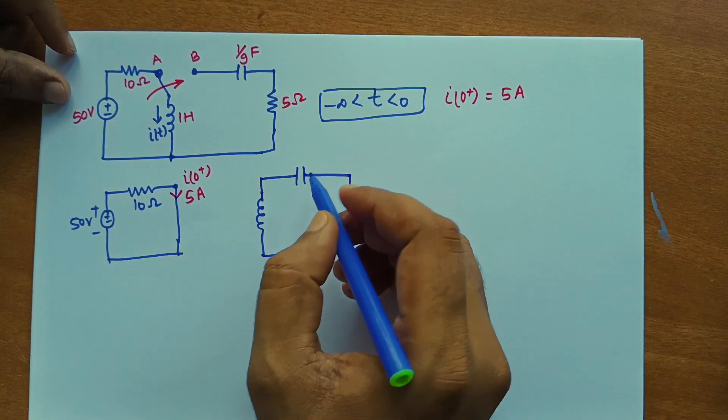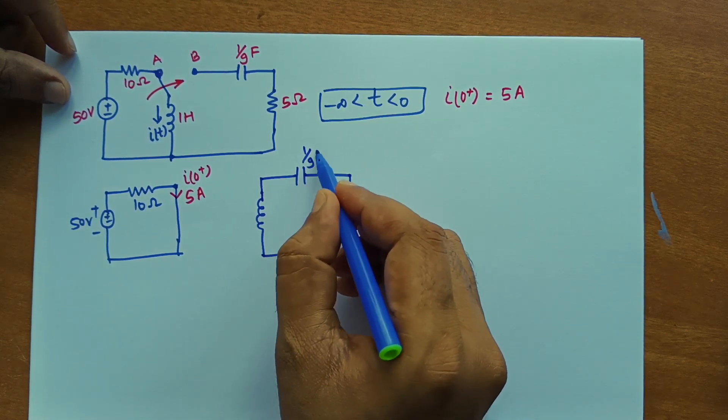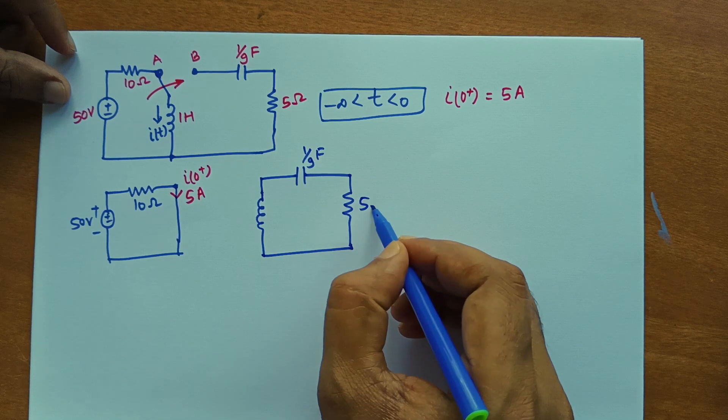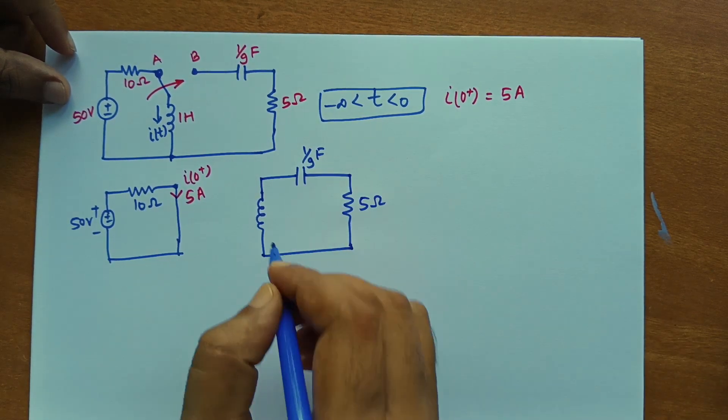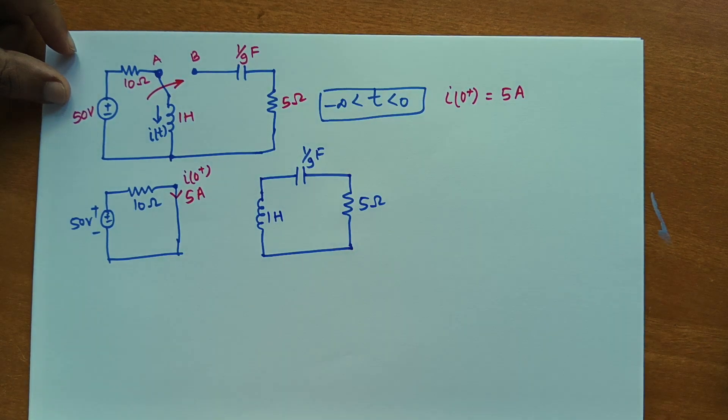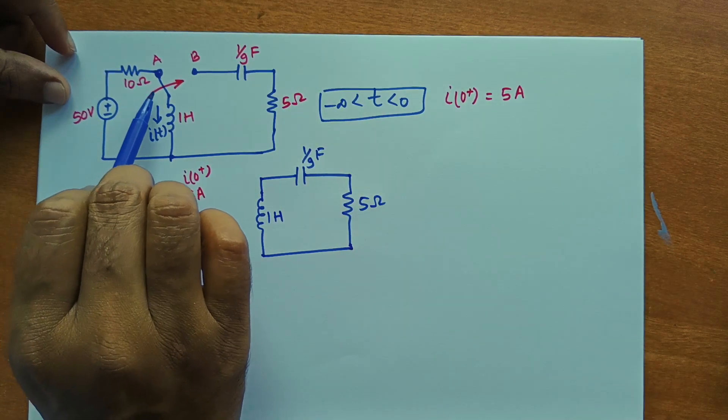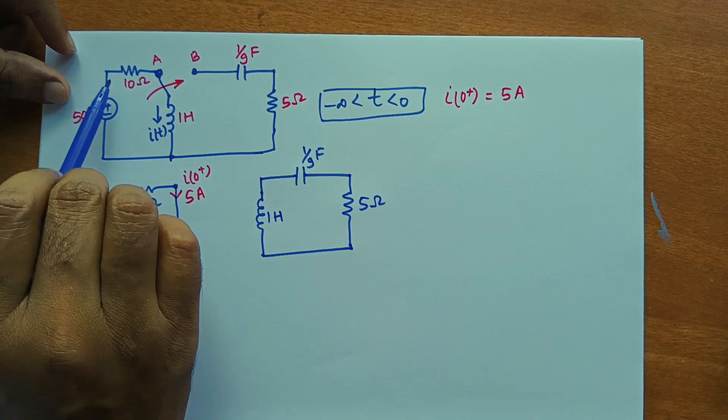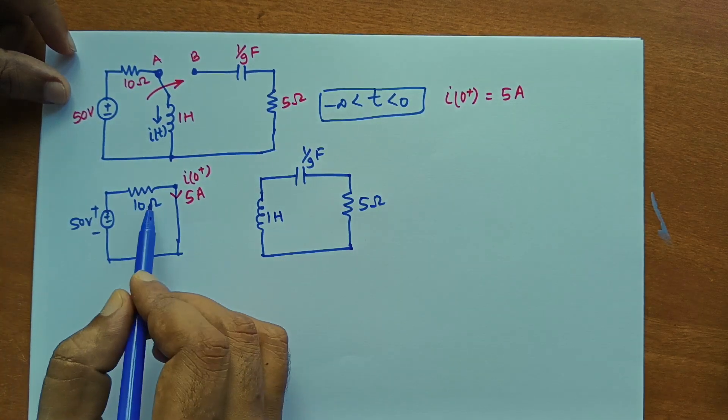So here you have 1 by 9 Faraday capacitor, 5 ohm resistance and 1 Henry inductor. So as soon as this switch is on.